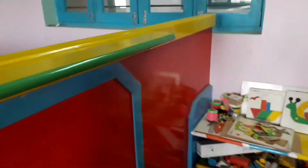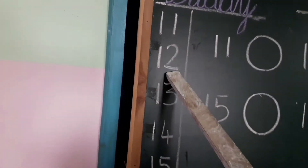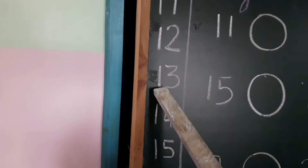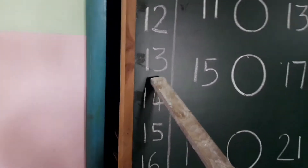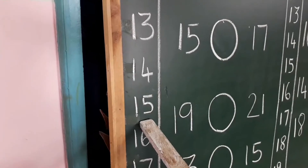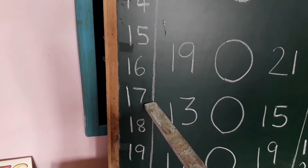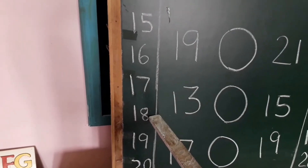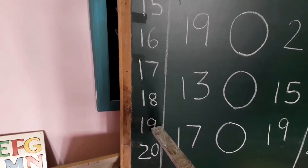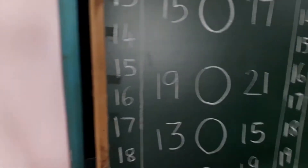First we will read the numbers 11 to 20. 11, 1-2: 12, 1-3: 13, 1-4: 14, 1-5: 15, 1-6: 16, 1-7: 17, 1-8: 18, 1-9: 19, and 2-0: 20.